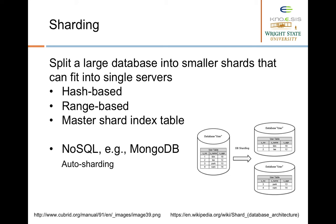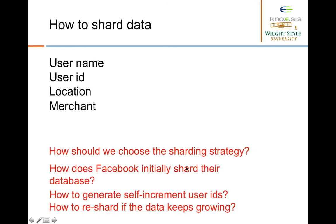In traditional SQL databases, you need to perform sharding manually. Recently, NoSQL databases such as MongoDB provide auto-sharding features — you select a sharding key and the database automatically splits data across machines, which is very convenient. You can shard by various strategies: username (e.g., names starting with A go to machine 1, B to machine 2), user ID, location, or merchant type.